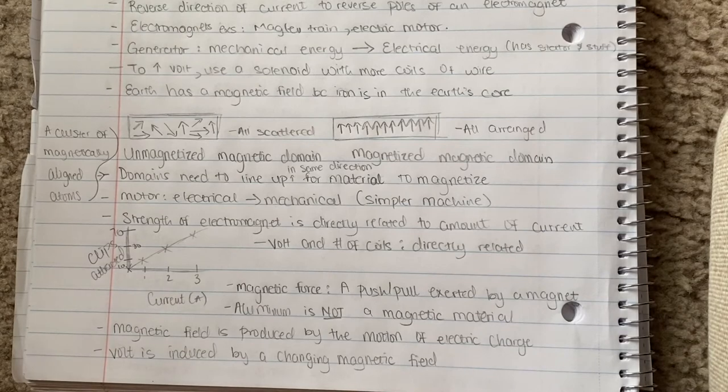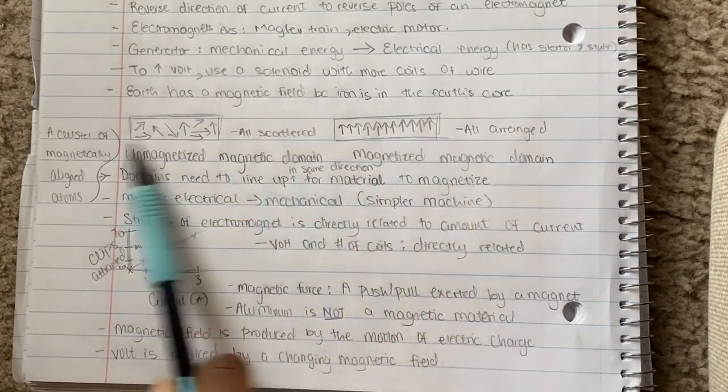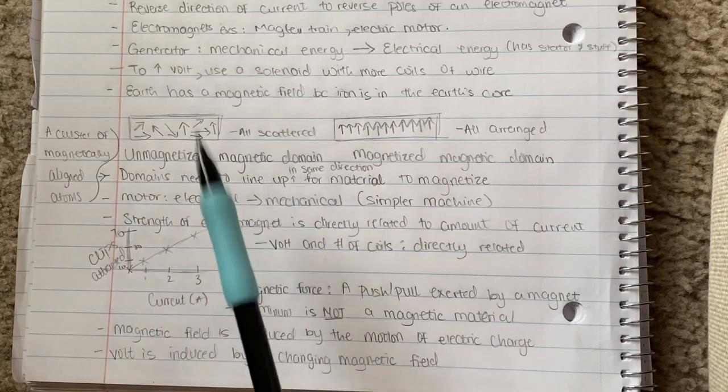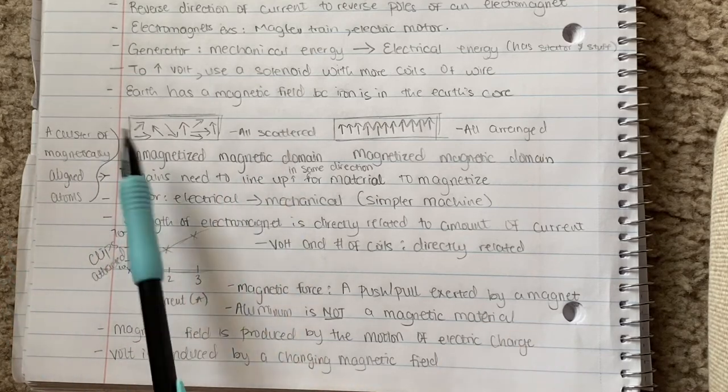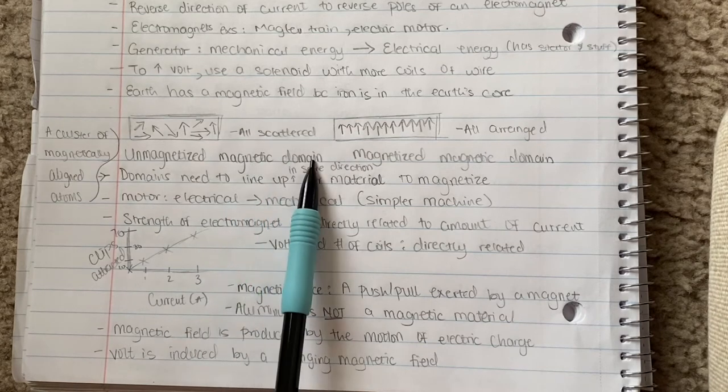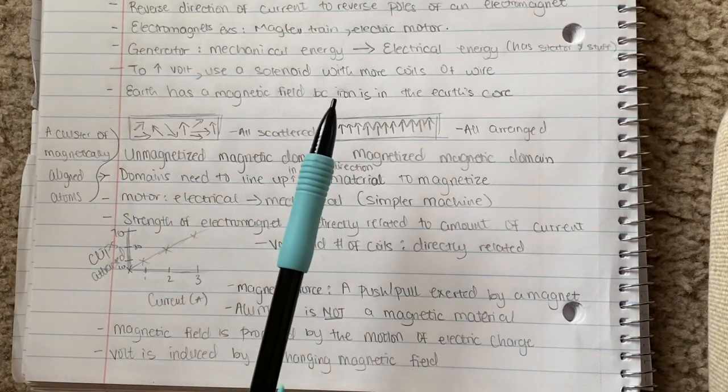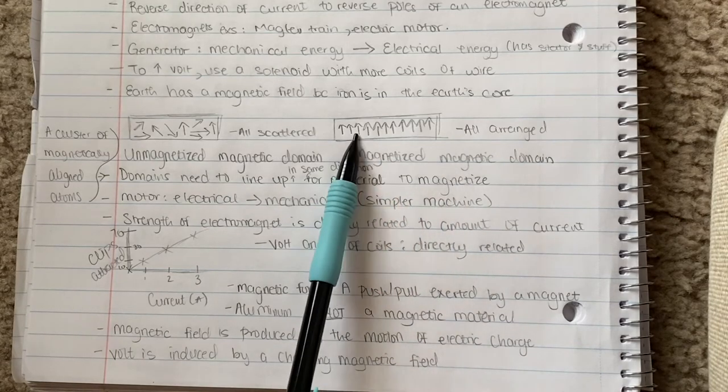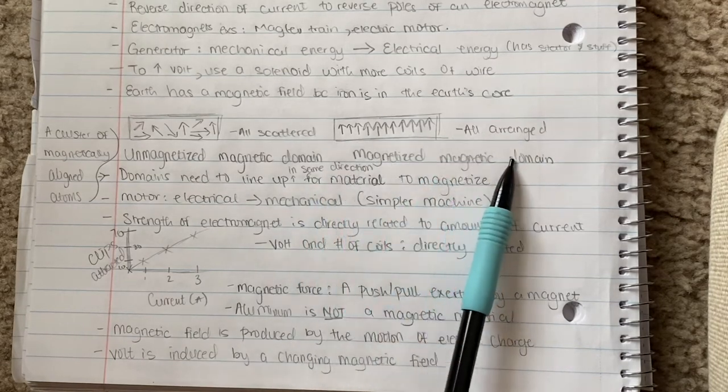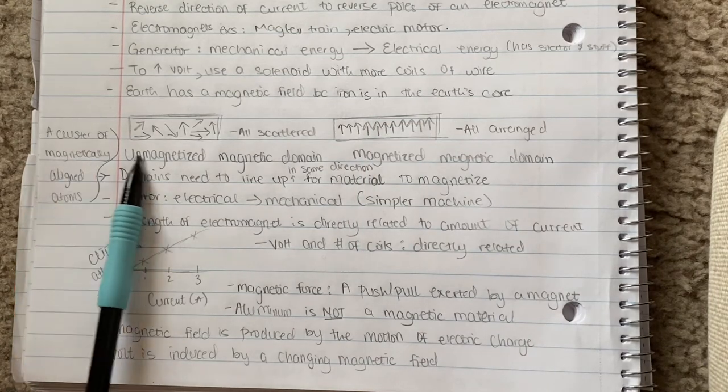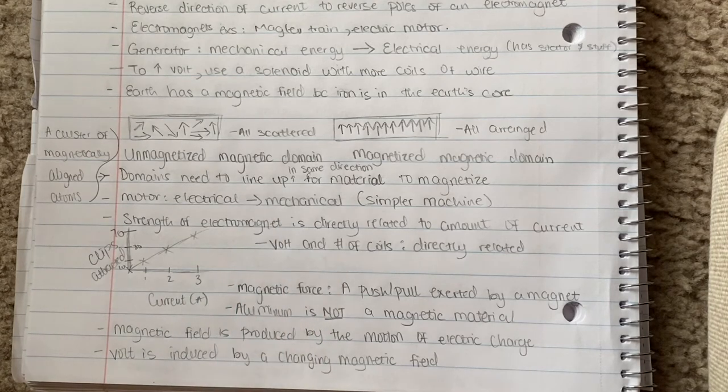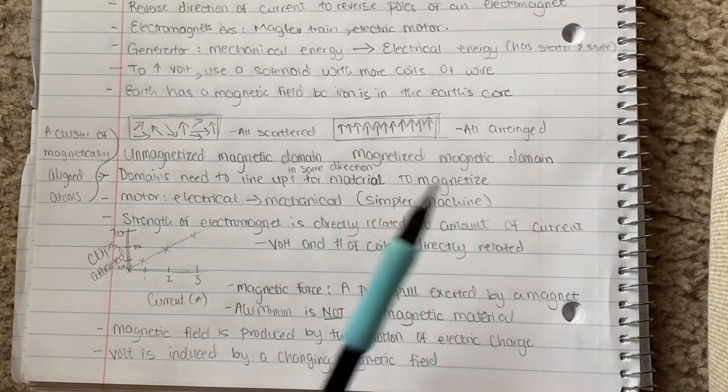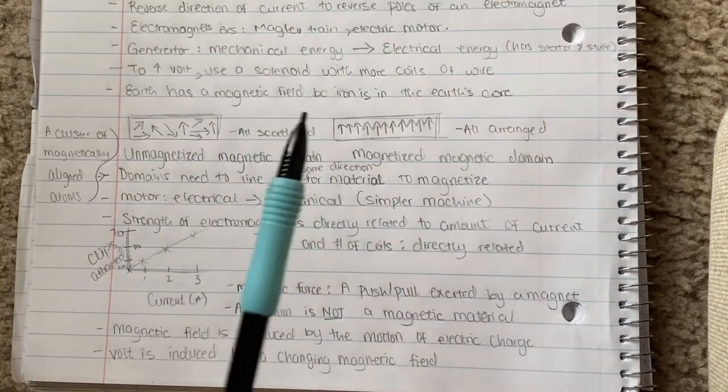Now let's move into more stuff that we did like at the very beginning of the semester, like day one or day two. This is the magnetic domains. You see how this one there is no correlation, they're all scattered all over the place? It is an unmagnetized magnetic domain and it cannot pick up anything or be magnetized. It could be magnetized if it was arranged like this one over here. It's all arranged and it is a magnetized magnetic domain. A domain is a cluster of magnetically aligned items. Domains need to line up in the same direction in order for the material to magnetize and be able to pick up paper clips and metals and stuff like that.